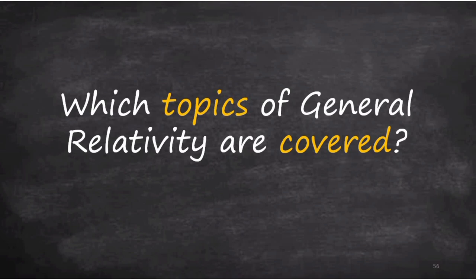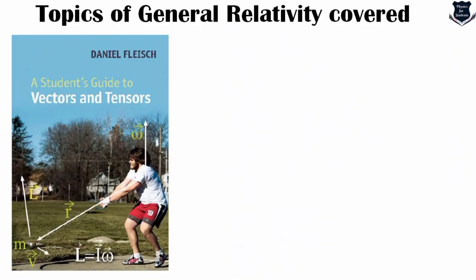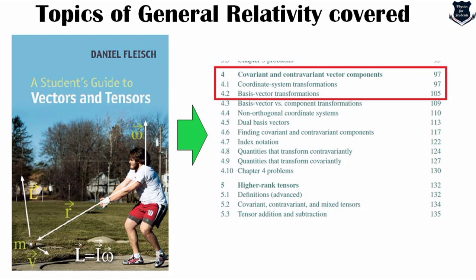Let's see what topics are covered in these tensor books, and whether they actually cover what we need for general relativity. Taking Daniel Fleisch's book — it covers metric tensor, tensor derivatives, Christoffel symbols, covariant differentiation, and Riemann curvature tensor. So it covers essential parts of general relativity. It also covers covariant and contravariant components, coordinate transformations, and related topics. This book is first of all very easy to understand, very user-friendly, with simple and less complicated content covering those areas of tensors required in general relativity.